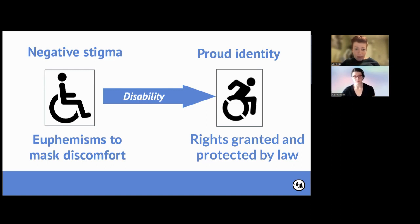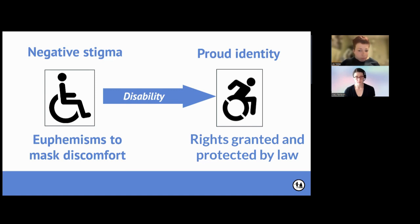Put simply, the Act is designed to prevent direct and indirect discrimination of people with disabilities, as well as harassment and victimisation. Of course, the Act is limited in its scope and does not provide true equity. But ultimately, the goal is to ensure people with disabilities can reach their full potential and participate in an equal society.